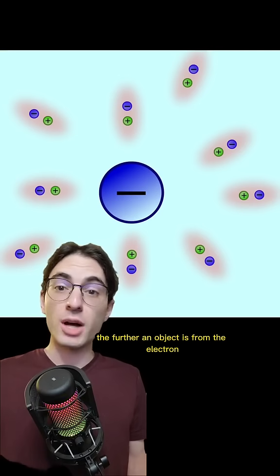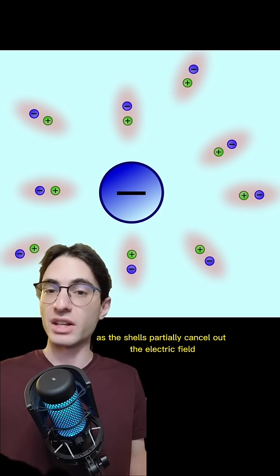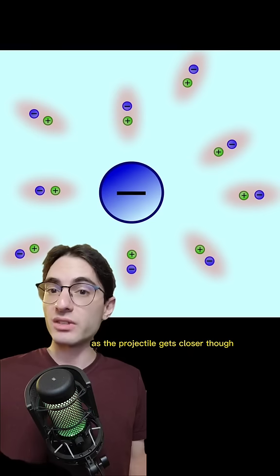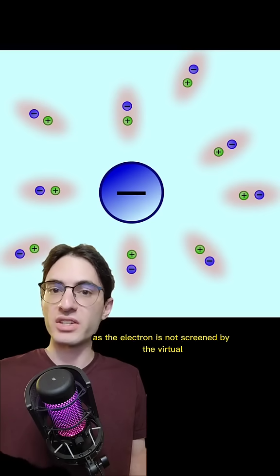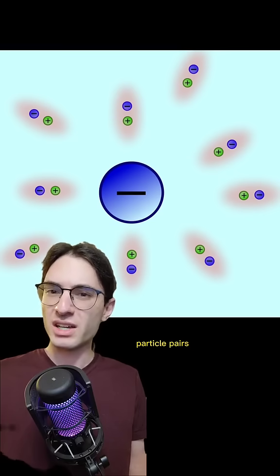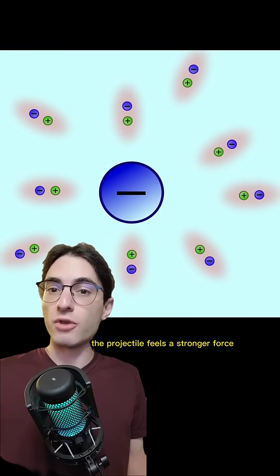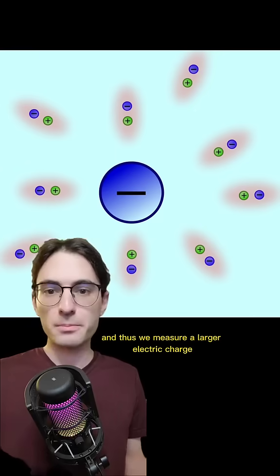The further an object is from the electron, the more of these shells it sees, and thus the less electric field it sees, as the shells partially cancel out the electric field. As the projectile gets closer, though, it sees more of the true field, as the electron is not screened by the virtual particle pairs. As the electric field is observed to be larger, the projectile feels a stronger force, and thus we measure a larger electric charge.